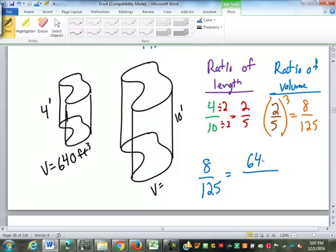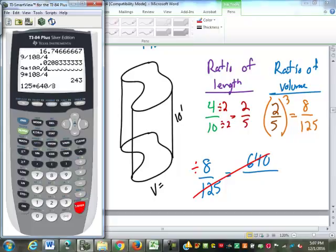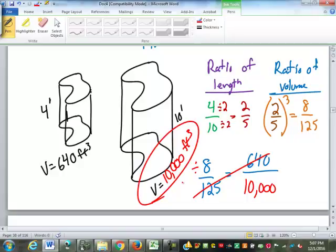Once again the 640 goes on tap because that's the smaller one goes with the smaller number which is the 8, we will cross multiply and divide. 125 times 640 divided by 8 which is 10,000. This volume is 10,000 cubic feet. What do you think?